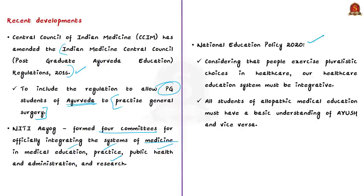There is another important development pertaining to the National Education Policy of 2020. The NEP 2020 speaks about medical pluralism and lateral entry. The document says that, considering people exercise pluralistic choices in healthcare, our healthcare education system must be integrative. This means all students of allopathic medical education must have a basic understanding of Ayurveda, yoga and naturopathy, Unani, Siddha, and Homeopathy — that is, AYUSH — and also vice versa: students of AYUSH medical education should also have a basic understanding of allopathic medical education.